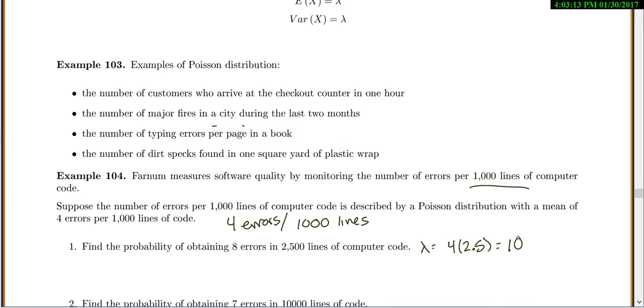Or you could set up a ratio. If you remember how to do ratios from algebra class, you could do like 4 out of 1,000 equals λ over 2,500, and go from there.